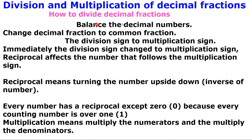Before you can divide a given decimal fraction, the first thing you have to do is to balance the decimal numbers. After balancing the decimal numbers, you change the decimal fractions to common fractions. When you change the decimal fractions to common fractions, because we are dealing with division, the division sign will change to multiplication. And immediately the sign changes to multiplication, the reciprocal affects the number that follows the multiplication sign.